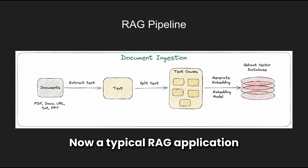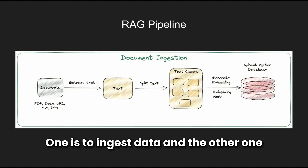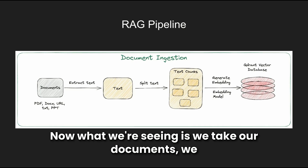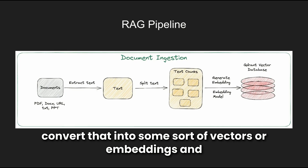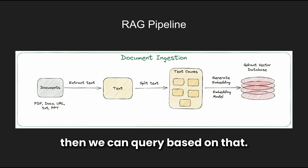A typical RAG application has two different pipelines. One is to ingest data, and the other one is to query data or ask questions to it. We take our documents, convert them into vectors or embeddings, store them in a vector database, and then we can query based on that.